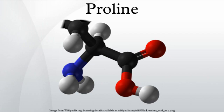Peptide bond formation with incoming Pro-tRNA-Pro is considerably slower than with any other tRNAs, which is a general feature of N-alkyl amino acids. Peptide bond formation is also slow between an incoming tRNA and a chain ending in proline, with the creation of proline-proline bonds being slowest of all.